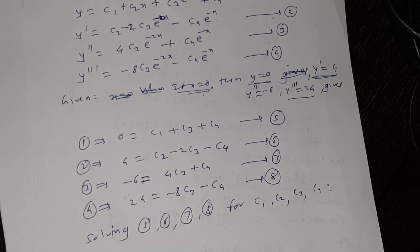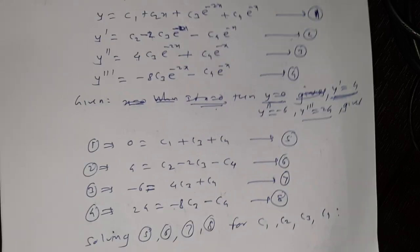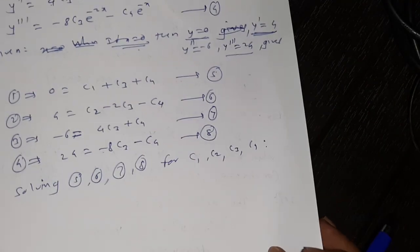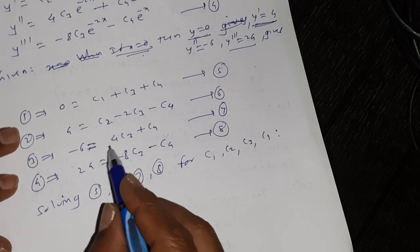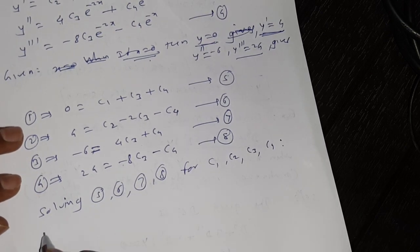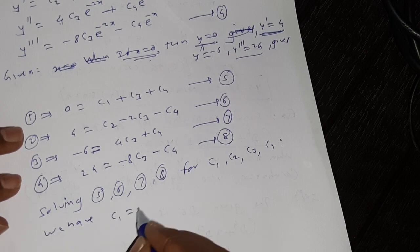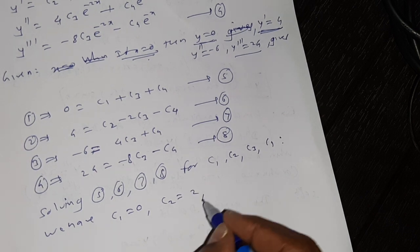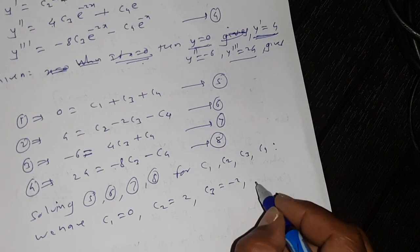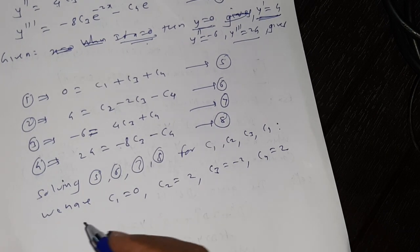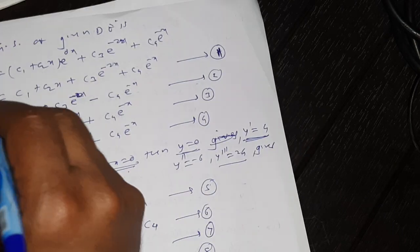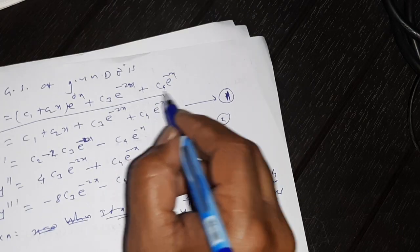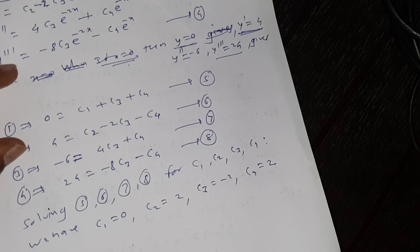We solve the system by addition and subtraction, or by using Gauss elimination method. After solving these equations we get: c1=0, c2=2, c3=-2, c4=2. Substituting these values into the general solution gives the particular solution.